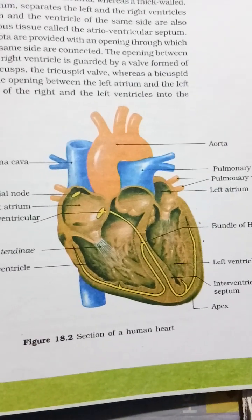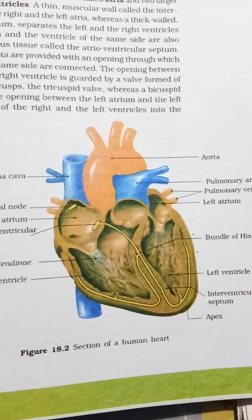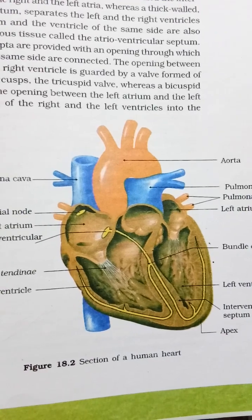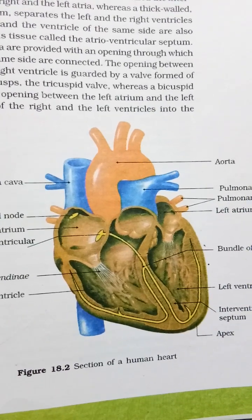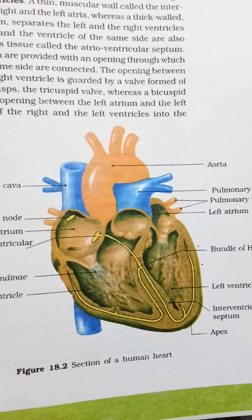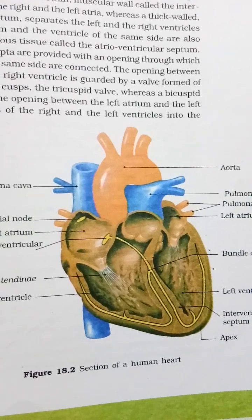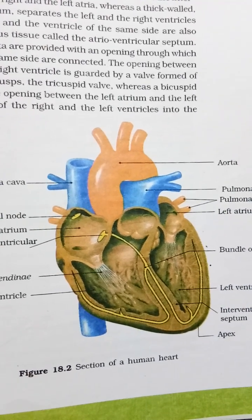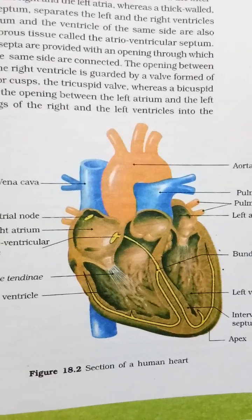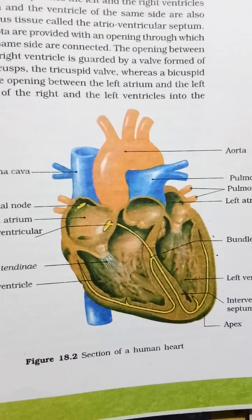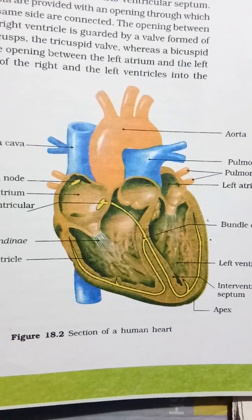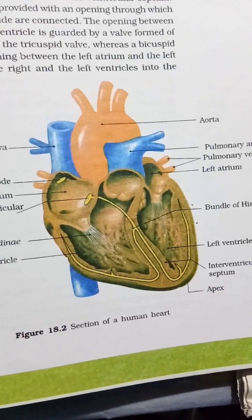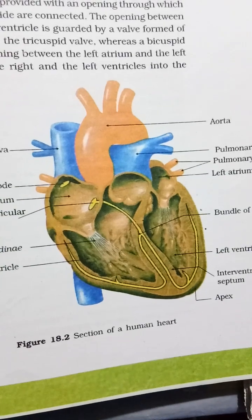There are two relatively small upper chambers called atria. The thick-walled inner ventricular septum separates the left and right ventricles. The atrium and ventricle of the same side are also separated by a thick fibrous tissue called the atrioventricular septum.